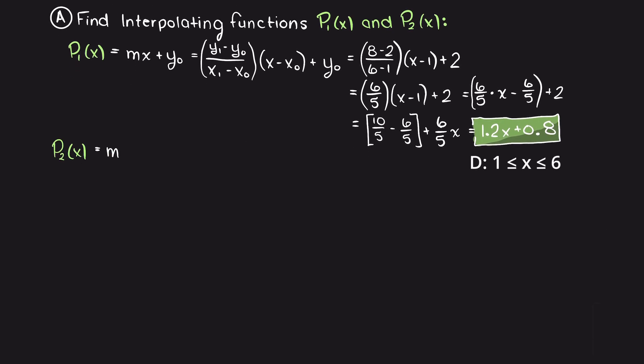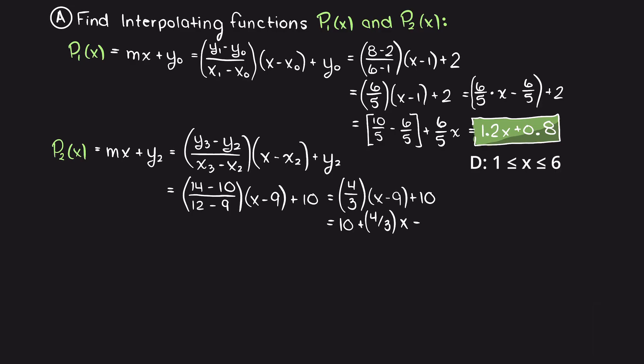Secondly, we will now solve p2 in the exact same way using our data points at x equals 9 and 12. After applying our known values and simplifying, we are left with 4x over 3 minus 2 with a domain of 9 to 12.